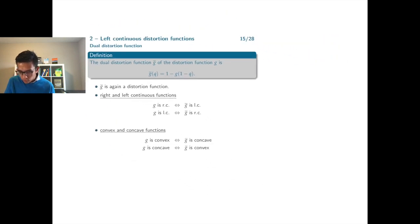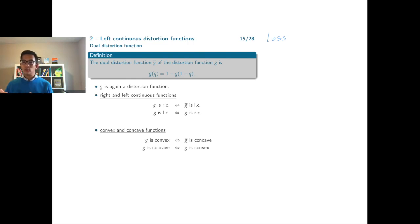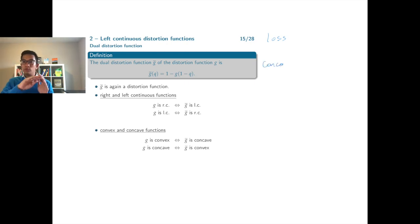If we have a loss random variable, then the tail probabilities are the probability that the loss exceeds some threshold. Stressing these tail probabilities means that we want to increase these probabilities. We can apply a distortion function such that the distorted tail probabilities are larger than the original tail probabilities by using a concave distortion function.